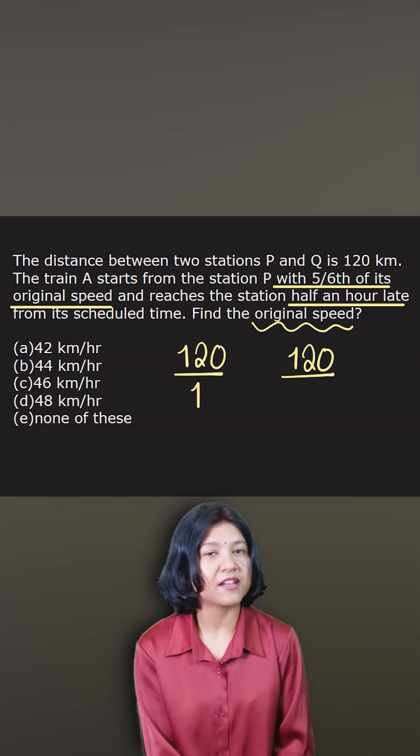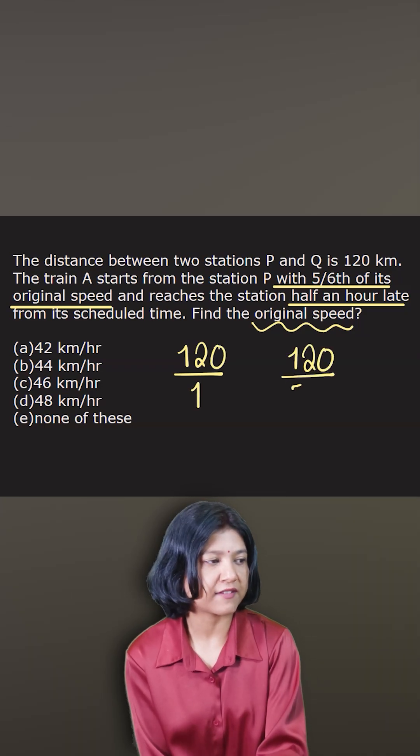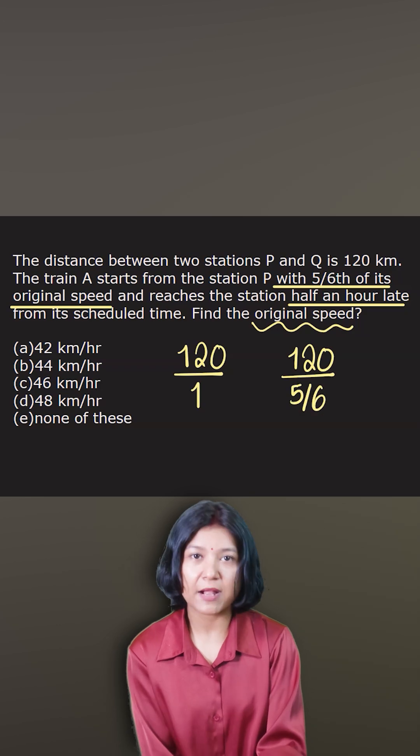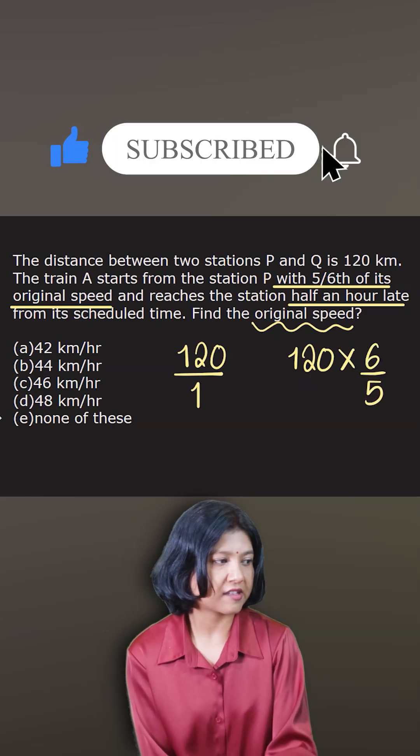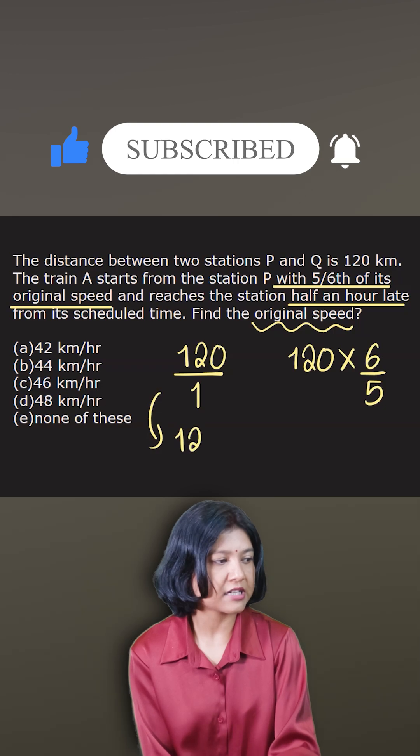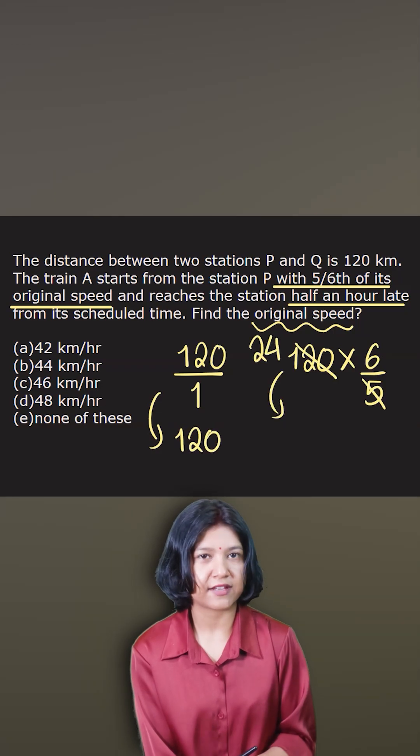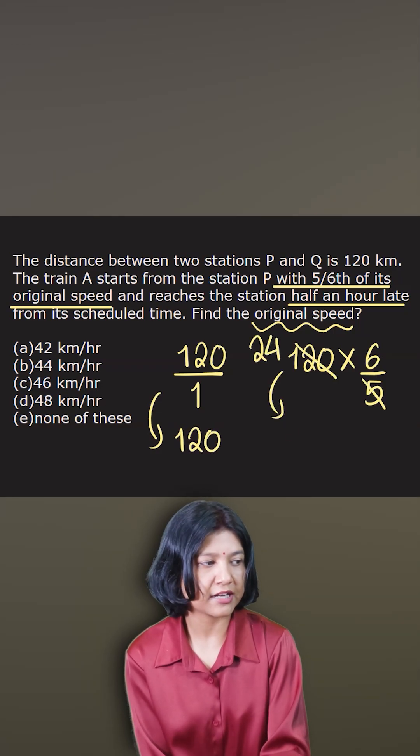Then in the second case, the speed is 5/6 of the original. So dividing by 5/6 is same as multiplying the reciprocal. So I'll just write down time 6/5. So in this case, I'm saying it's 120. 5 times how much is 120? 5 times 24 is 120. So we get 144.